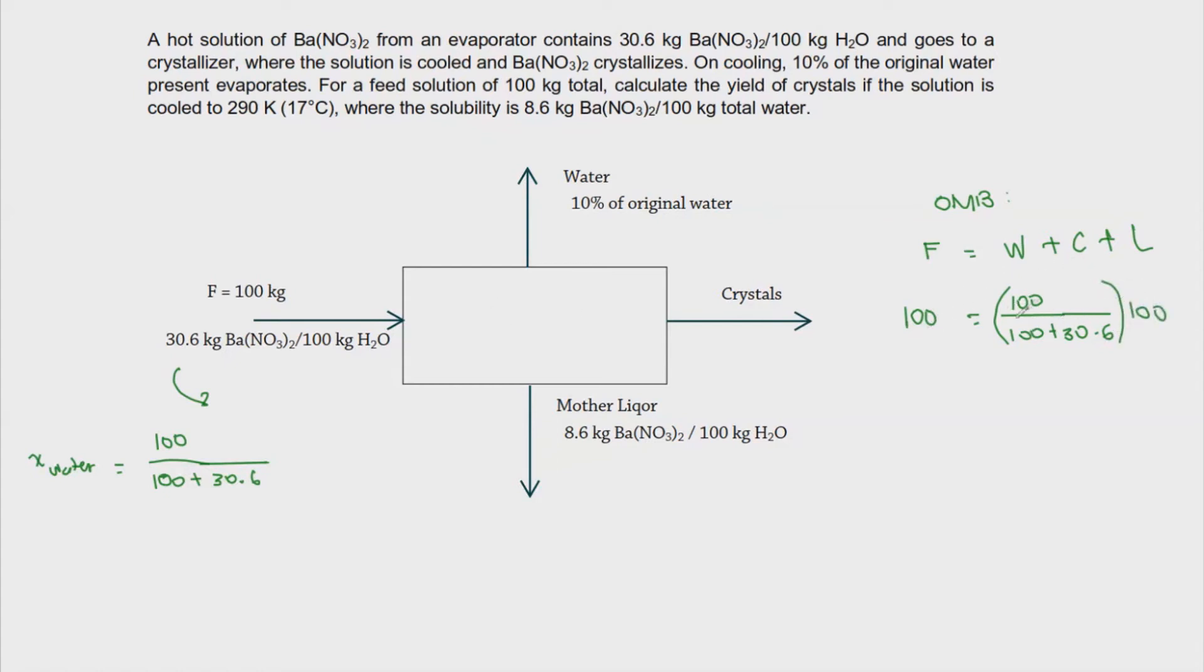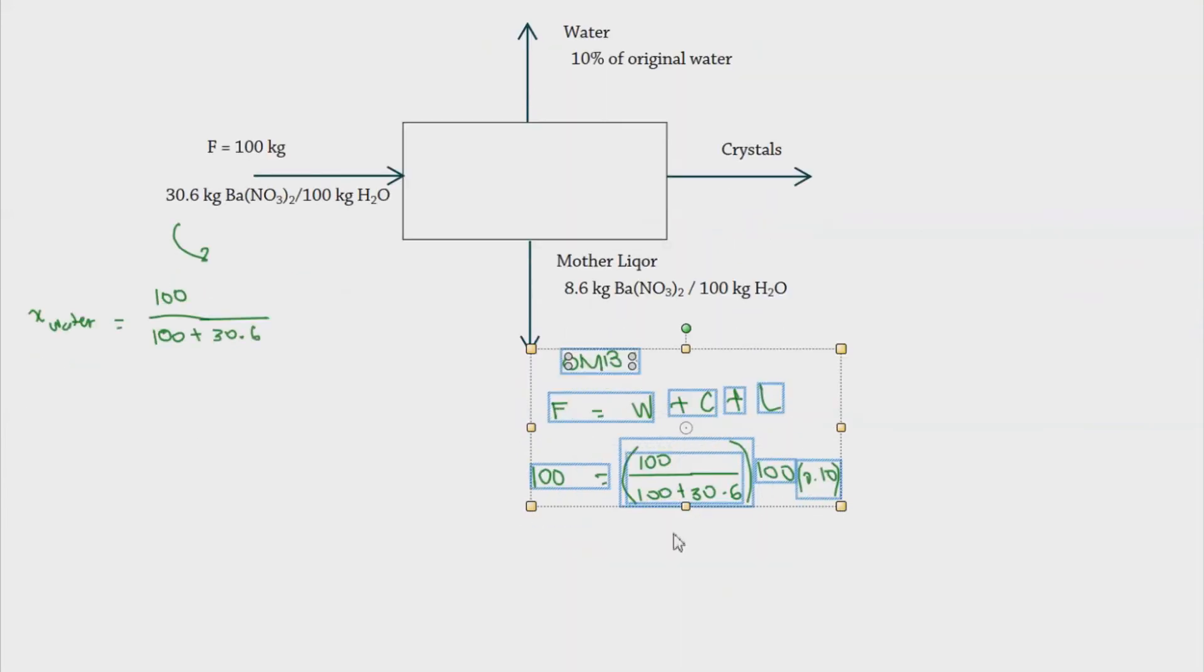So we know very well that this is now the amount of water present on the original feed. Now if you multiply this with 10%, so we know that this is the one that evaporates from the crystallizer. And then we add, let me just place it right here so that we can see it clearly. So then we proceed with the balance, we have plus C and then plus L. So we're left with the value of C plus L which is equal to 92.3430 and that is in kilograms.